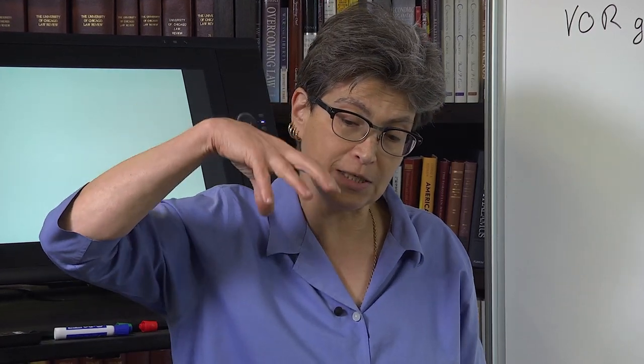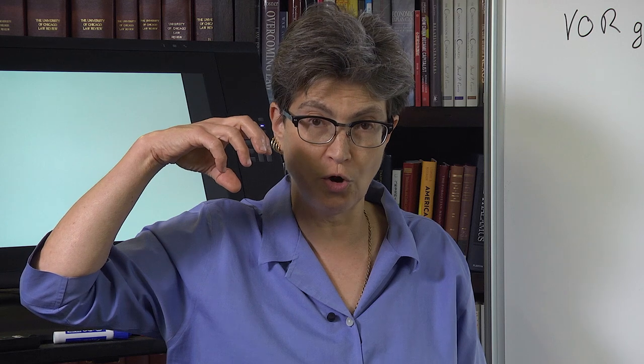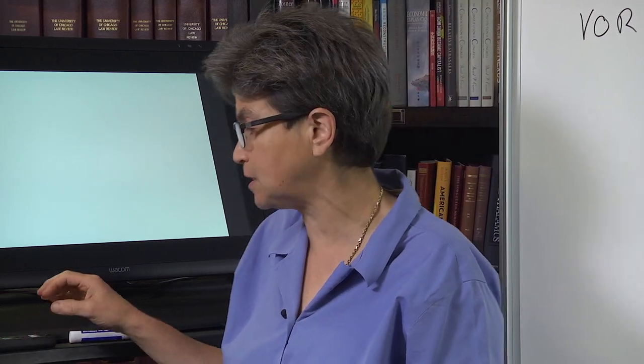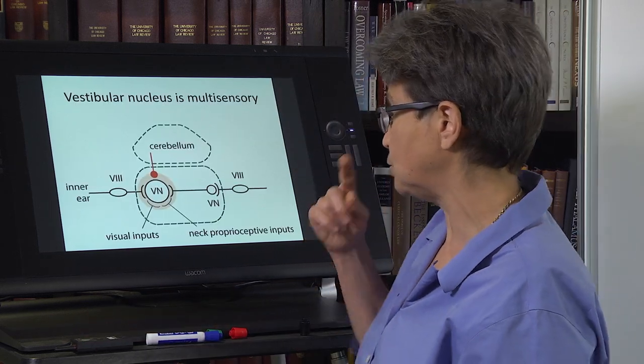The cerebellum is going to be the overlord of the vestibular nucleus neuron synapse. It's going to say: right now I want you to weight this synapse this much, and weight this other synapse this much. So let's see how that works in general.